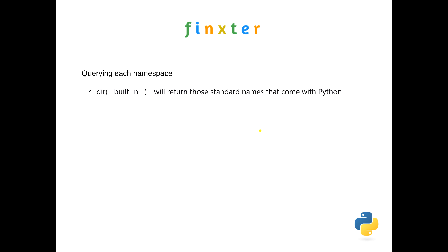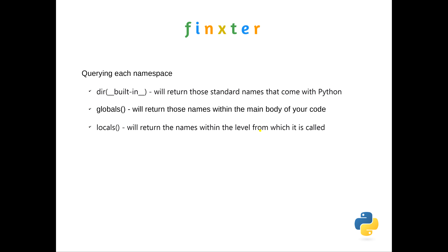When querying each namespace, there are different commands you can use. Double underscore built-ins returns the standard names that come with Python. Globals returns the names within the main body of your code. Locals will return the names within the level from which it's called. I will show you these in action in code in a minute.